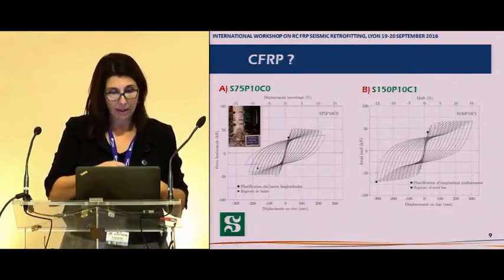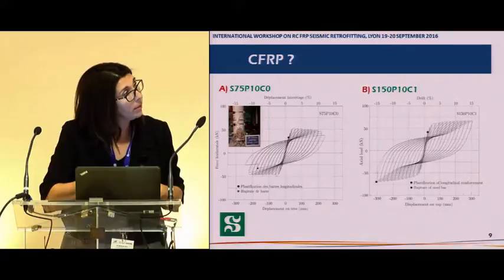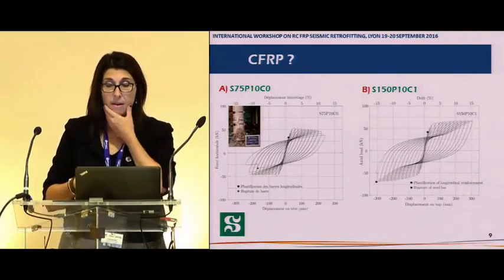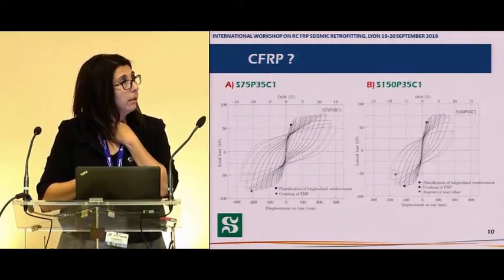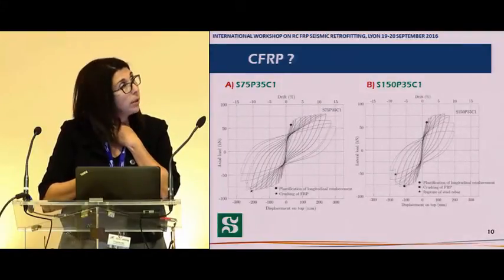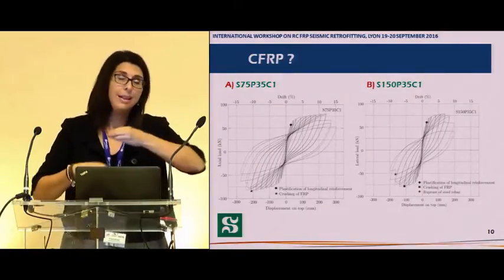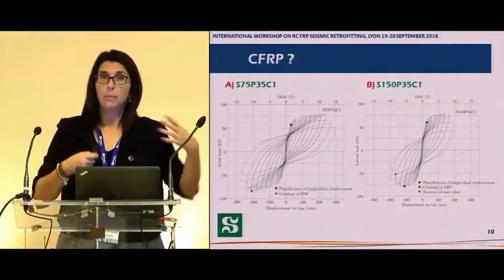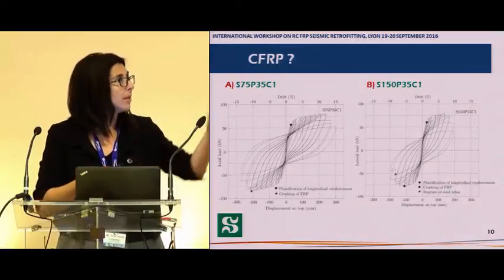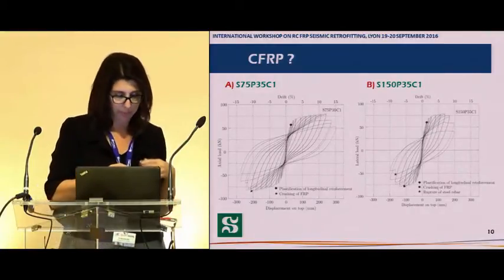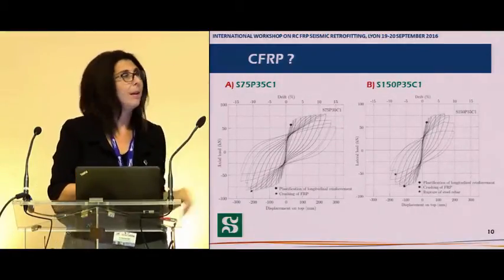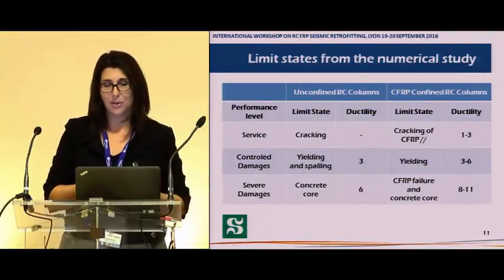Looking at four different spacings of transverse reinforcement with confinement and the same loading, we again see an increase in ductility, which is good. Finally, for a column with a higher axial load but different spacing, the gain in ductility is not there, but we perform almost as well as for the smaller spacing of transverse reinforcement, which is also good. But again, this was published back then, around 2013.